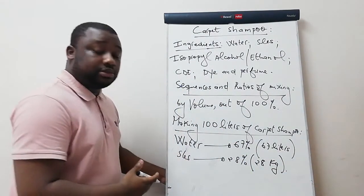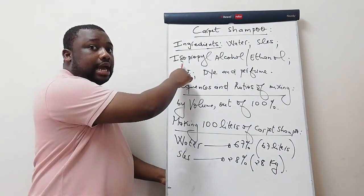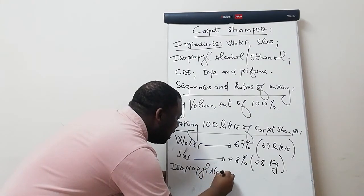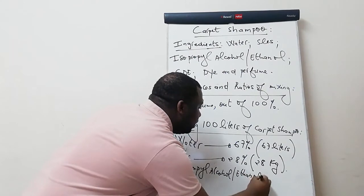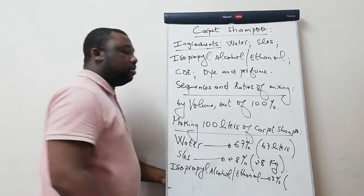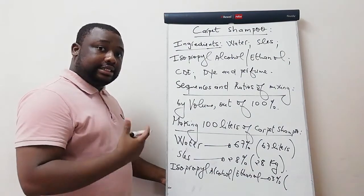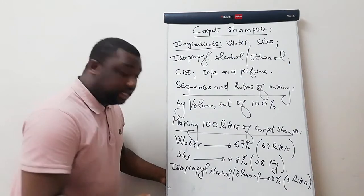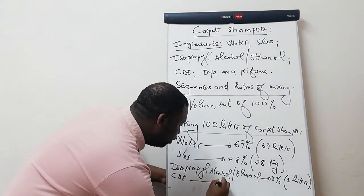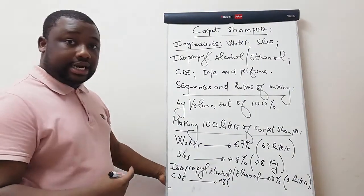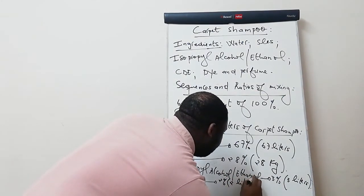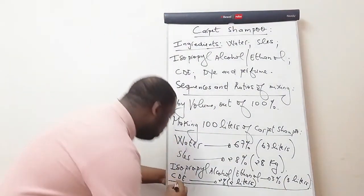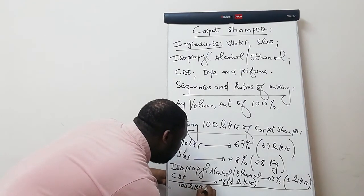When it comes to the alcohol, you make a choice — either isopropyl alcohol or ethanol. This should be 3% of the total volume, which is 3 liters. You also have your CDE, which should be 2% of the total volume — that is 2 liters. By doing this you obtain your 100 liters of carpet shampoo.